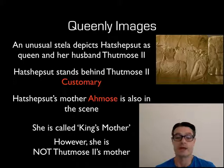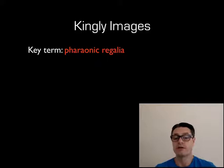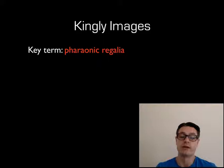Moving on to her kingly images. A term we need to learn is 'pharaonic regalia,' which refers to the trappings that a king would wear — for example, the false beard, the shendyt kilt, the Nemes headdress. All of those are considered pharaonic regalia, and it's a good term to use to sum up what Hatshepsut is wearing when she's depicting herself as a king.